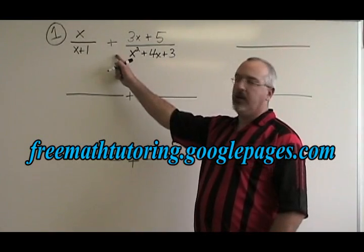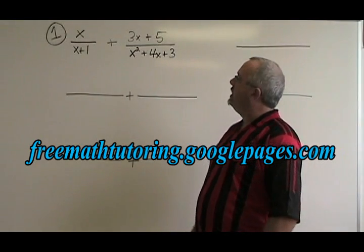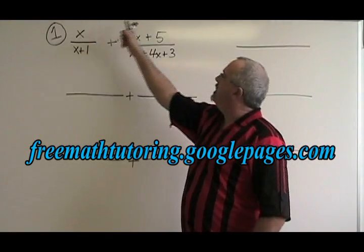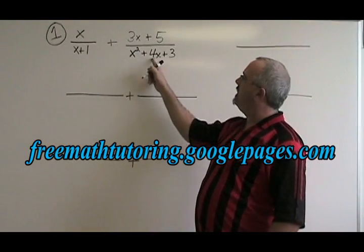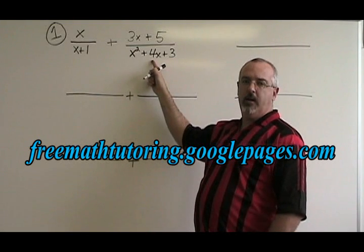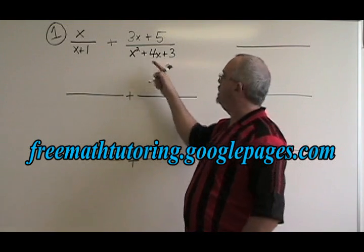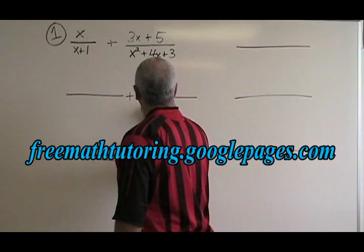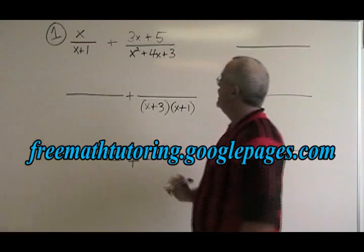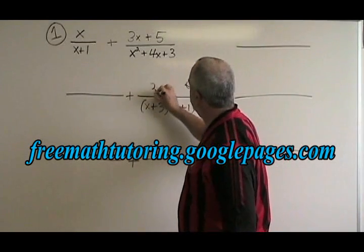When you're given an expression like this where you're being asked to add, the first thing you have to do is factor completely. Three of these expressions are already factored, but this is a simple trinomial. What two numbers multiply to give 3 and add to give 4? They are 3 and 1, so this factors to x plus 3, x plus 1. The rest of these expressions I'm just copying down.